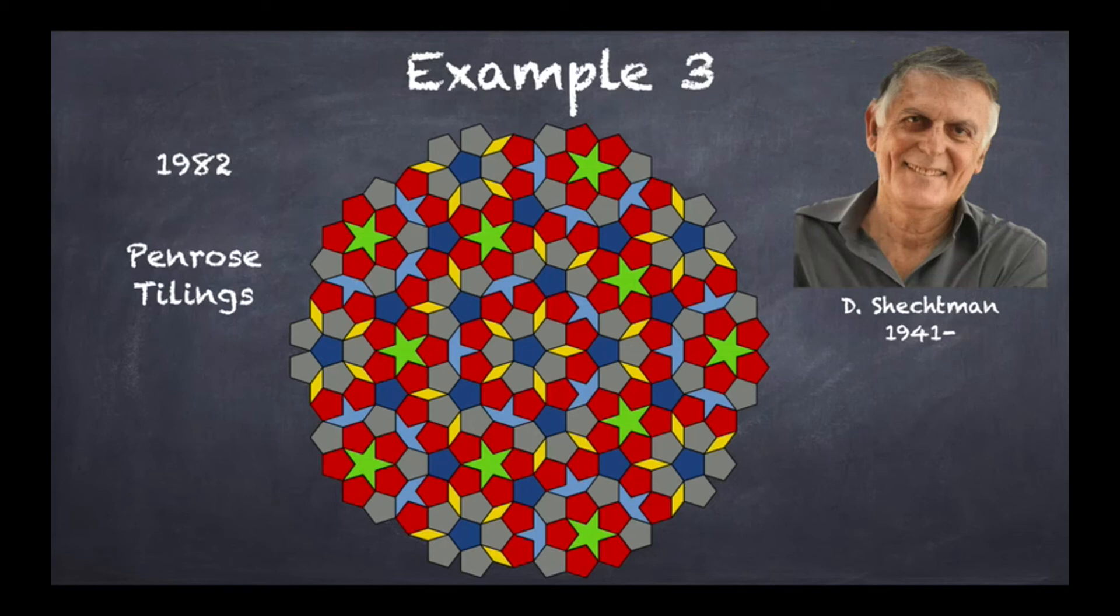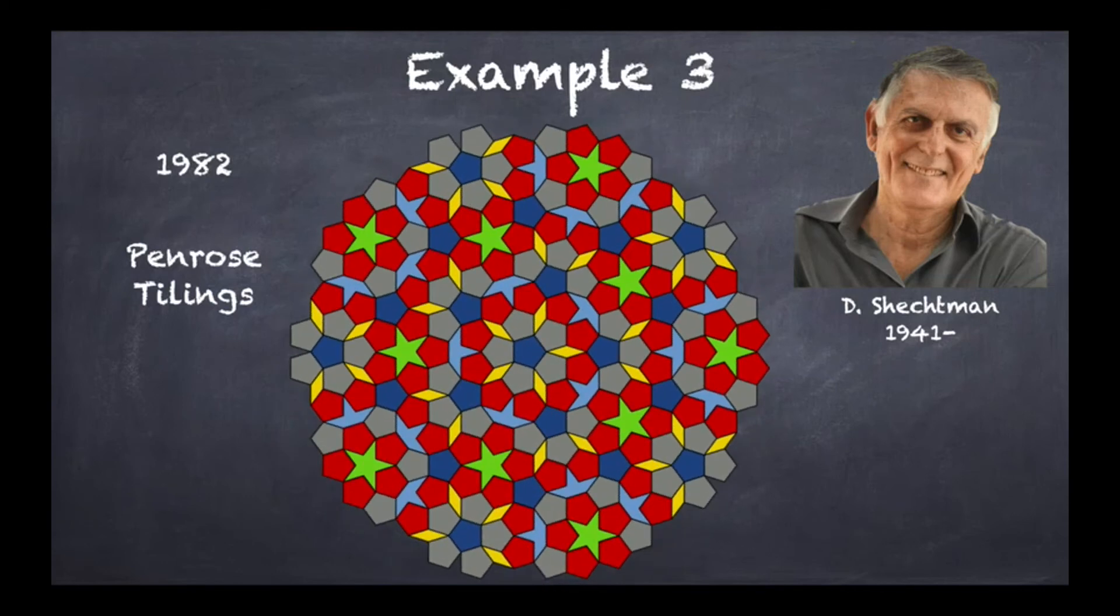But what is interesting is that if you rotate this thing by 72 degrees, you get the very same picture you started with. Remember that 72 degrees is equal to 360 divided by 5. So what this tells us is that Shechtman had found a five-fold symmetry crystal. Because there was a lack of translation symmetry, because this is a Penrose kind of tiling, then Shechtman suggested that this could be called quasi-crystals.